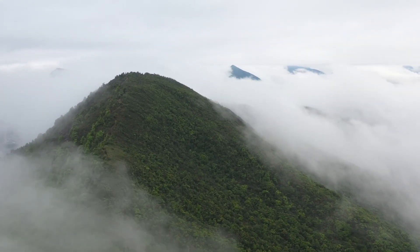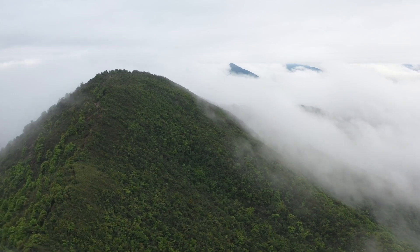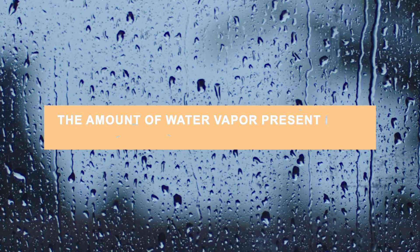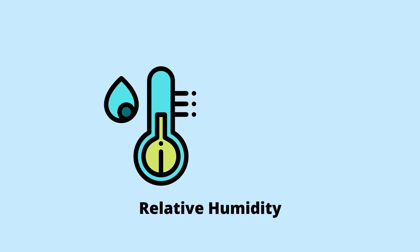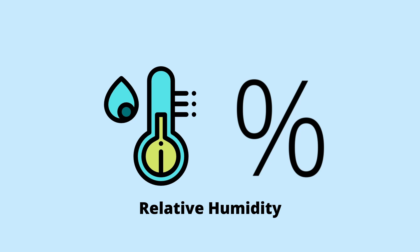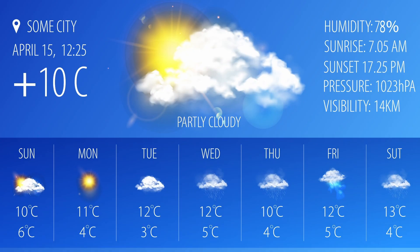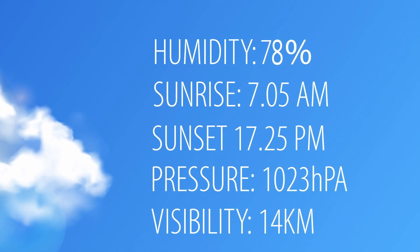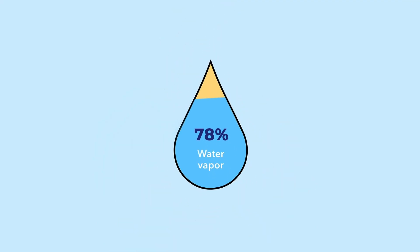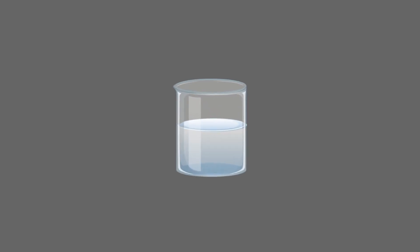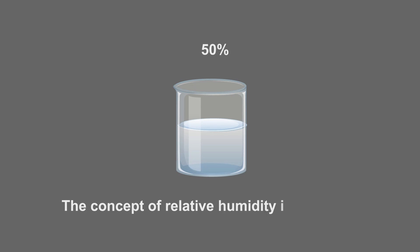Relative humidity, as the name suggests, is relative in nature. Basically, it's the amount of water vapor present in the air relative to what the air can hold. Relative humidity is generally expressed in percentages. If a weather report shows the relative humidity to be 78%, it means that, for the given temperature, the air is holding 78% of what it can actually hold. Think of it this way: if you have a glass of water that is half full, you would say that the glass contains 50% of what it can potentially hold. The concept of relative humidity is the same.